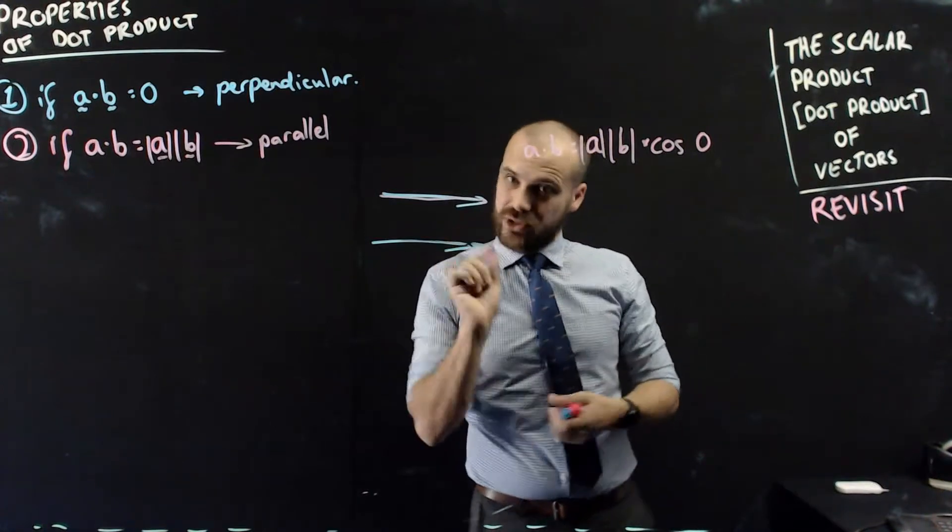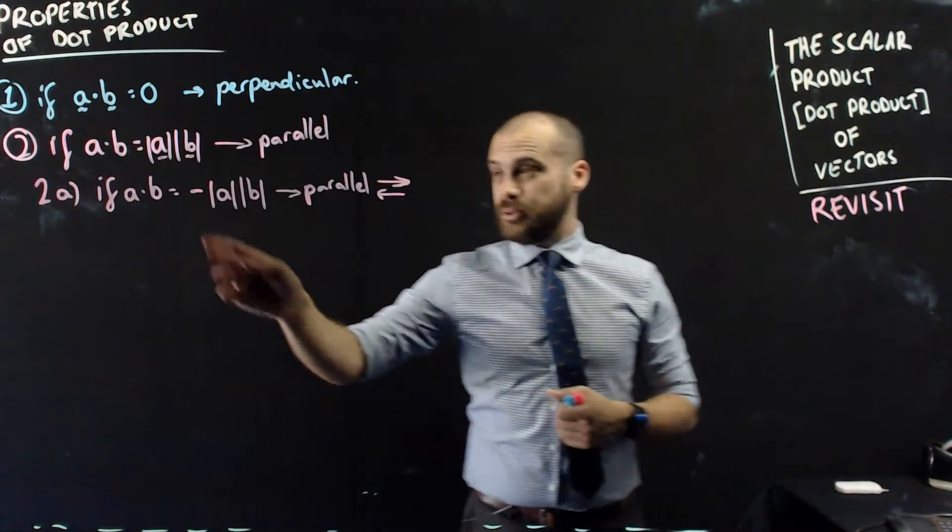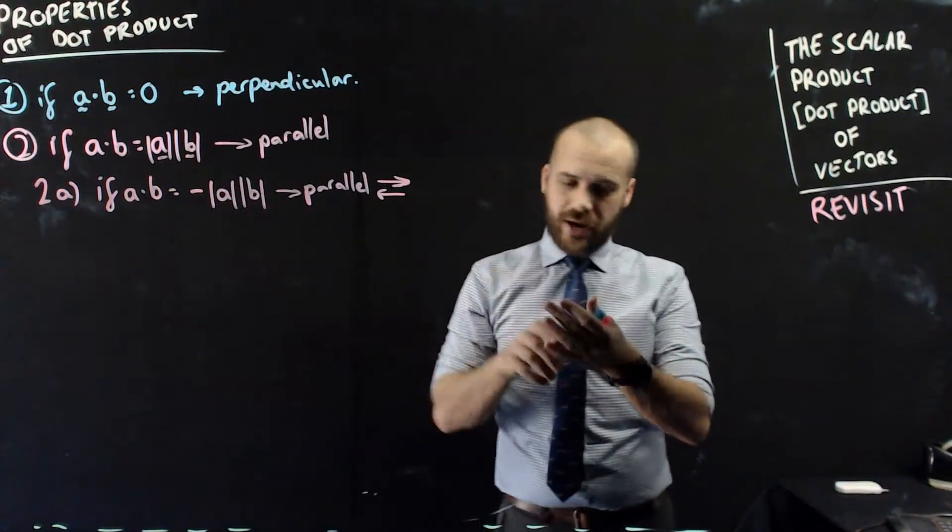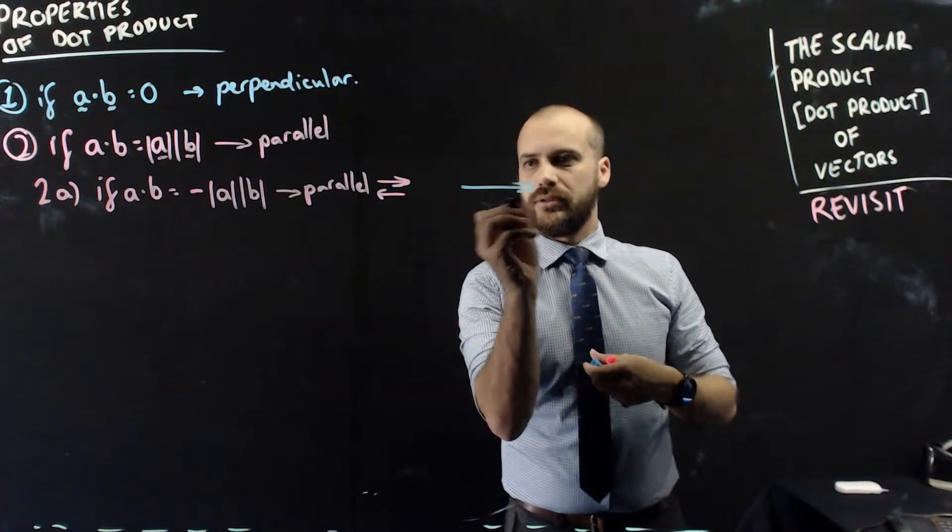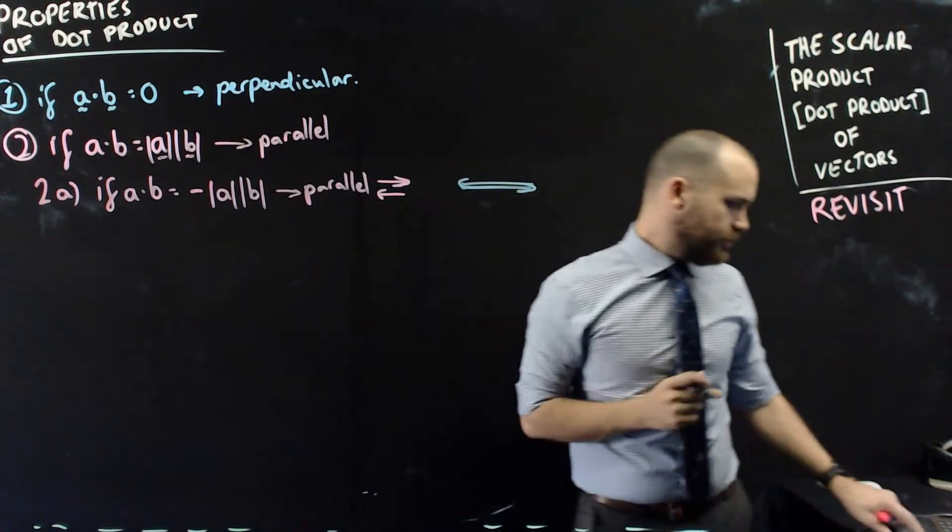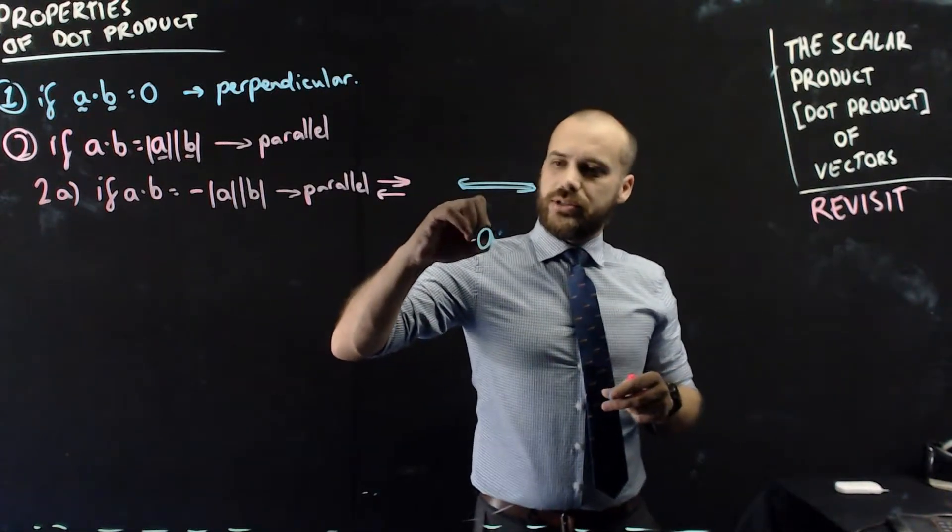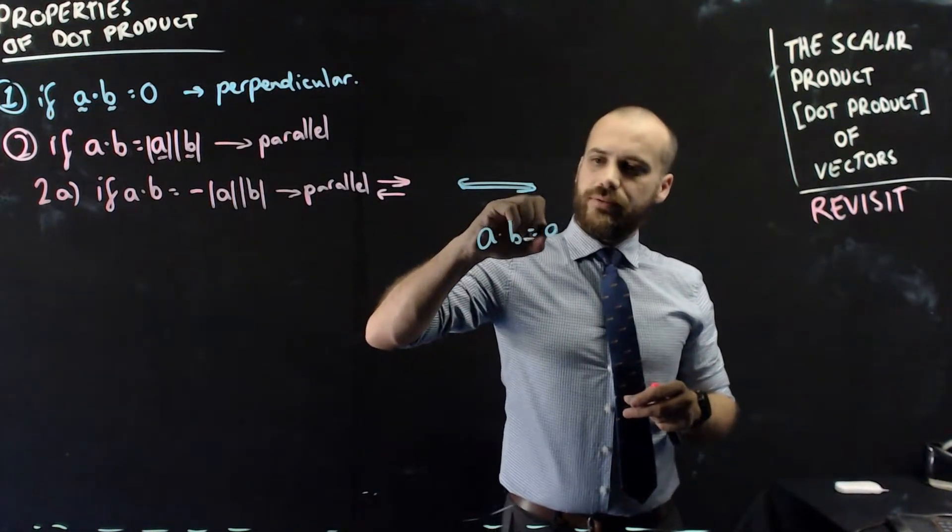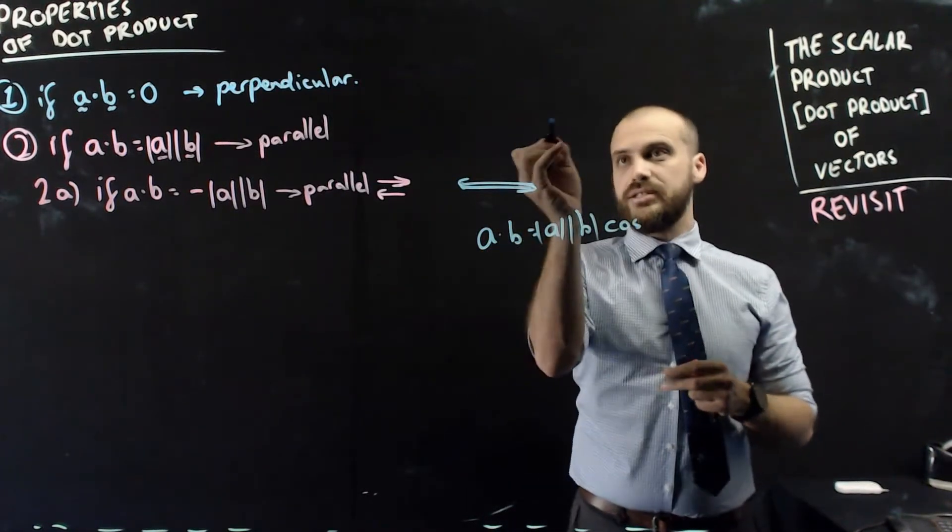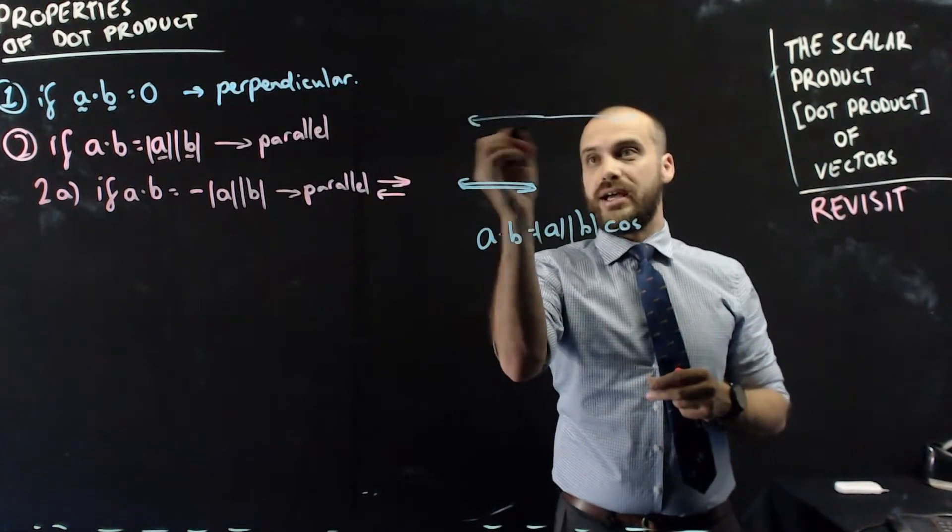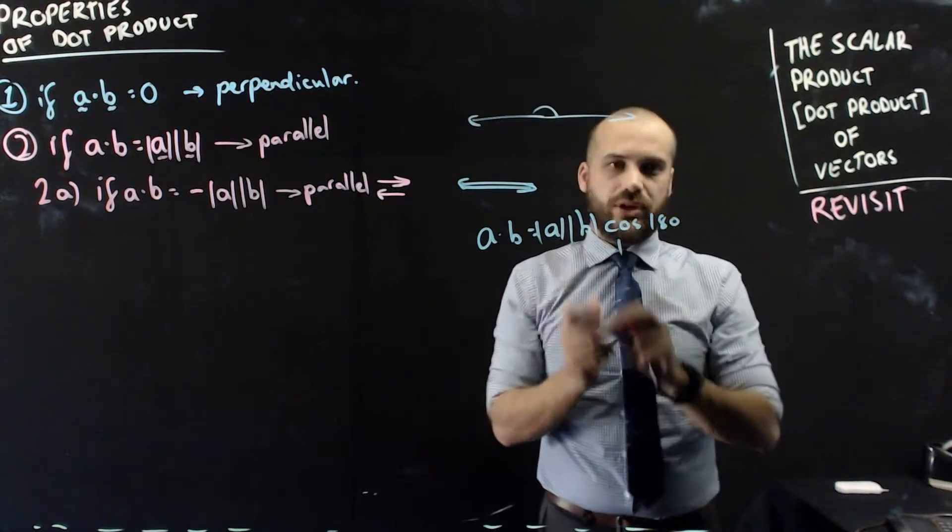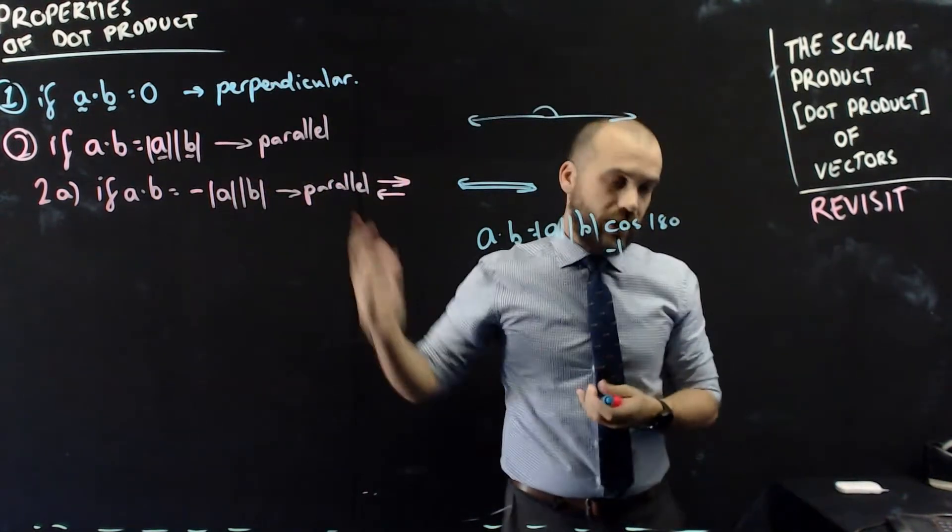There is sort of a small tweak on that one. If a dot b equals negative magnitude of a times magnitude of b, then they're parallel, but they're parallel in opposite directions. If you're wondering why that is, we can put it into its dot product formula again. Magnitude of a, magnitude of b, cos, and the angle between those two vectors, if I draw them like that, is 180, and that is negative 1. Negative 1 times those magnitudes. That's why that works.